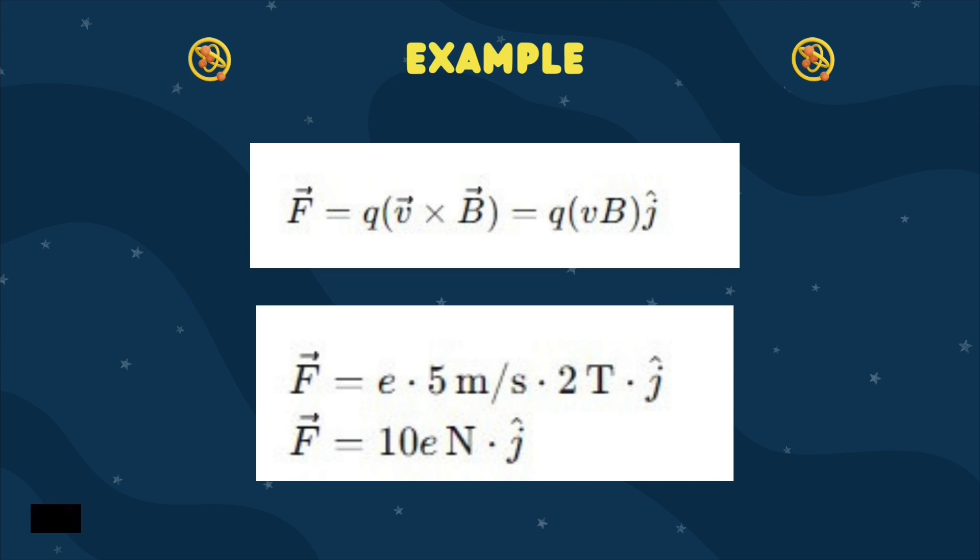F equals Q Vec V times Vec B equals QVB times J, whereas J is the unit vector in the Y direction, given that Q equals plus e and substituting V and B.